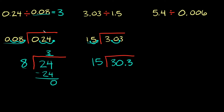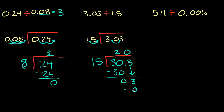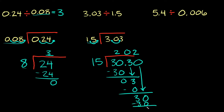These are the new numbers we're working with — they don't look as bad. Does 15 go into 3? No. Does it go into 30? Yes, 2 times. 2 times 15 is 30, so we subtract: 30 minus 30 is 0, then bring down the 3. How many times does 15 fit into 3? Zero times. Zero times 15 is 0, subtract: 3 minus 0 is 3. We write a 0 and bring it down. 15 goes into 30 two times; 2 times 15 is 30. Subtract: 30 minus 30 gives a 0 remainder.